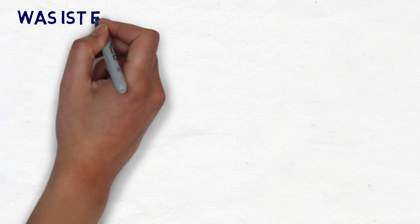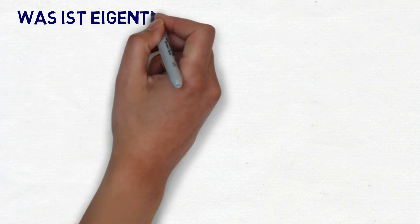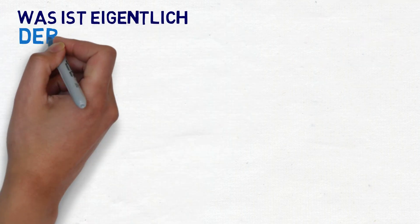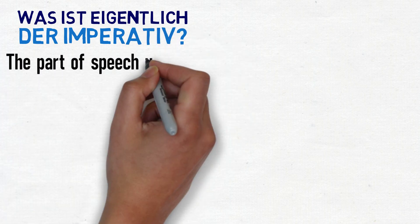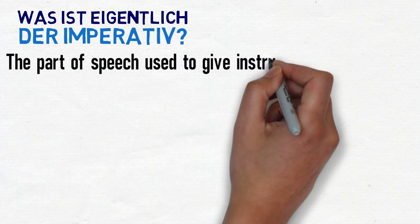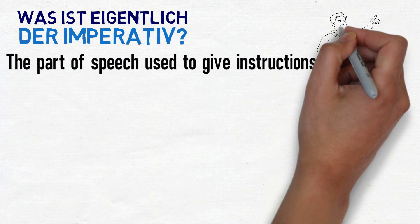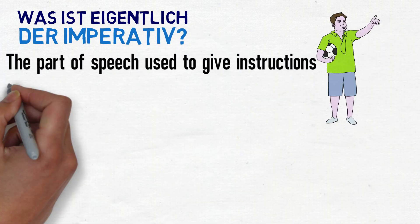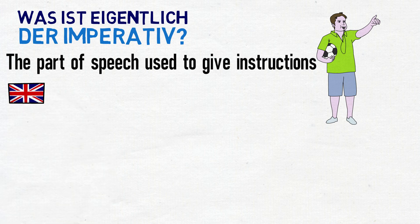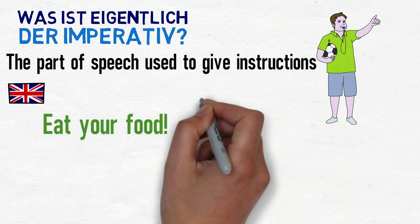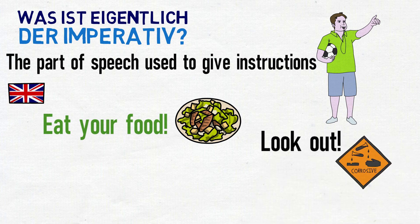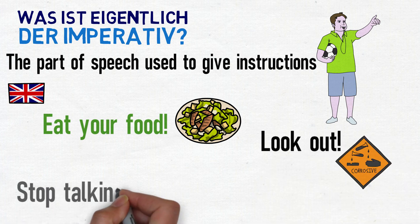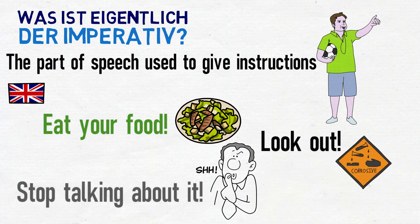In this lesson, we'll be looking at how to use something called the imperative mood. This is an aspect of speech which conveys instructions. Let's have a look at some examples in English: Eat your food. Look out. Stop talking about it.